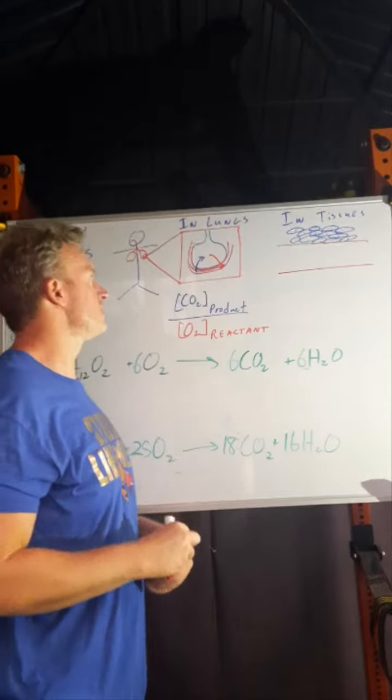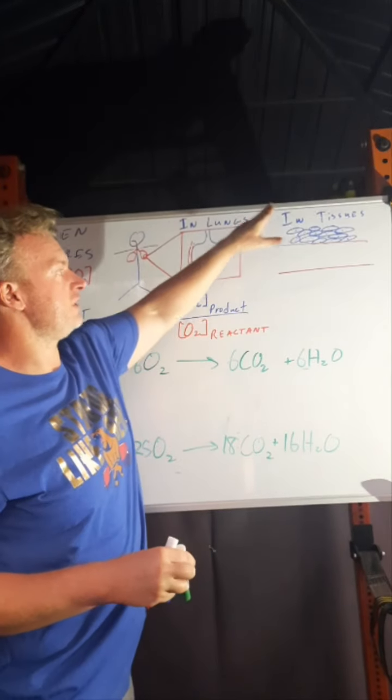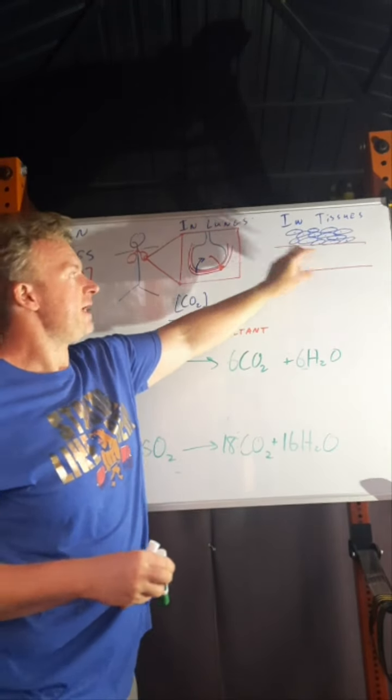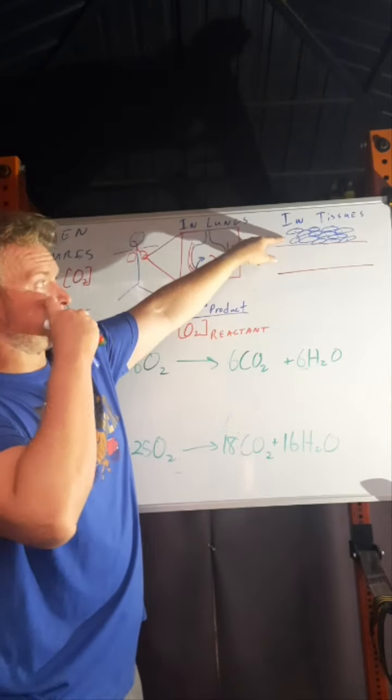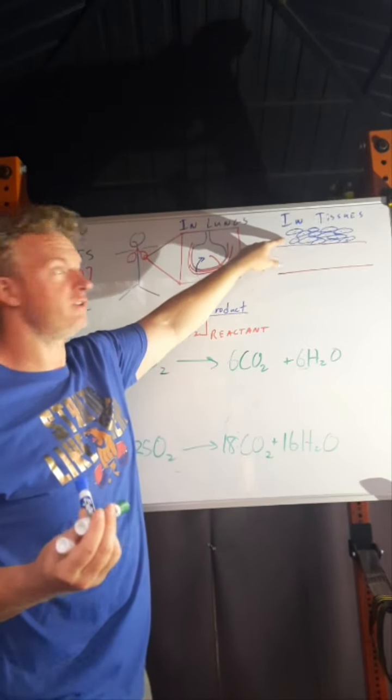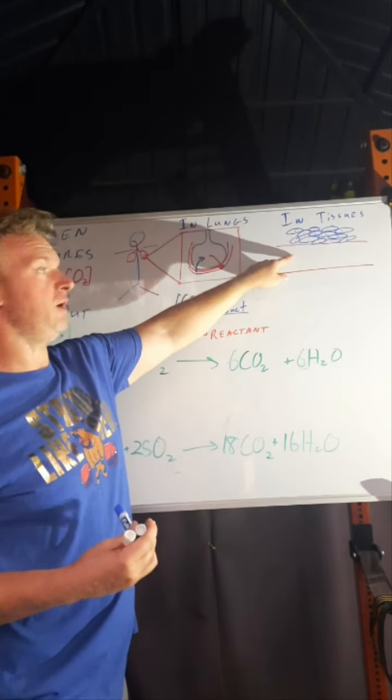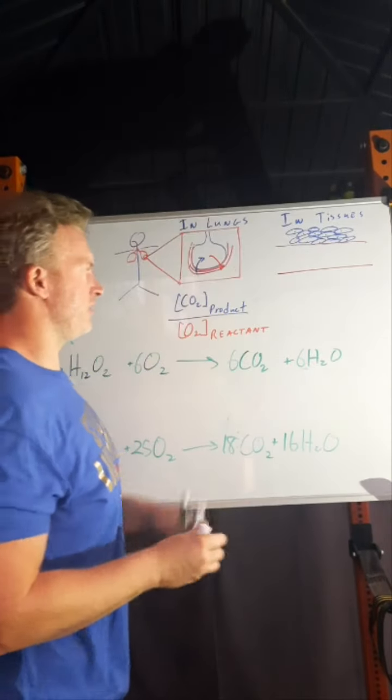That blood vessel eventually carries its way to tissues. This is meant to be, like, just squamous epithelial tissue next to a blood vessel. This is like the width of the blood vessel here.